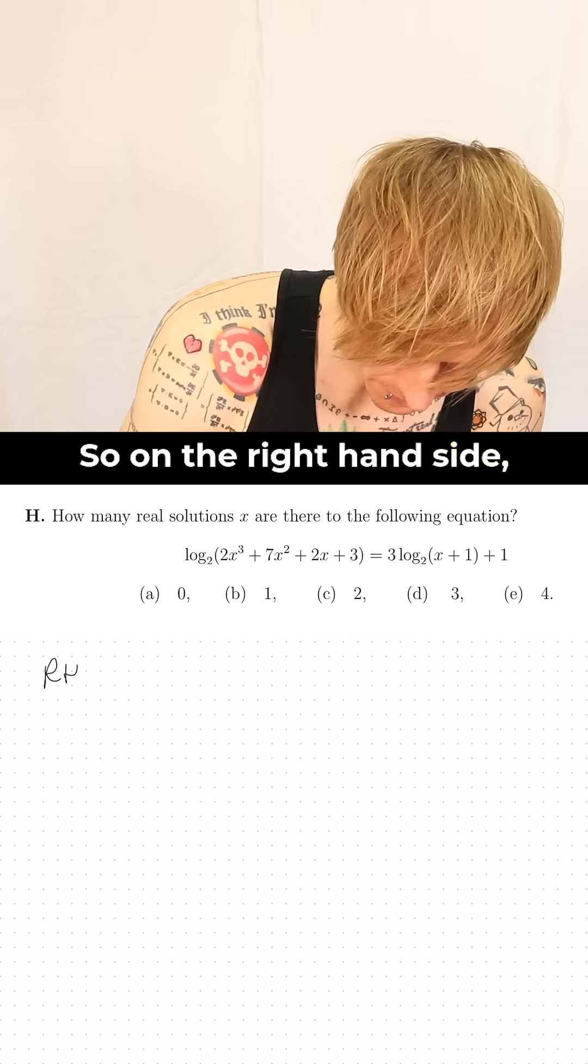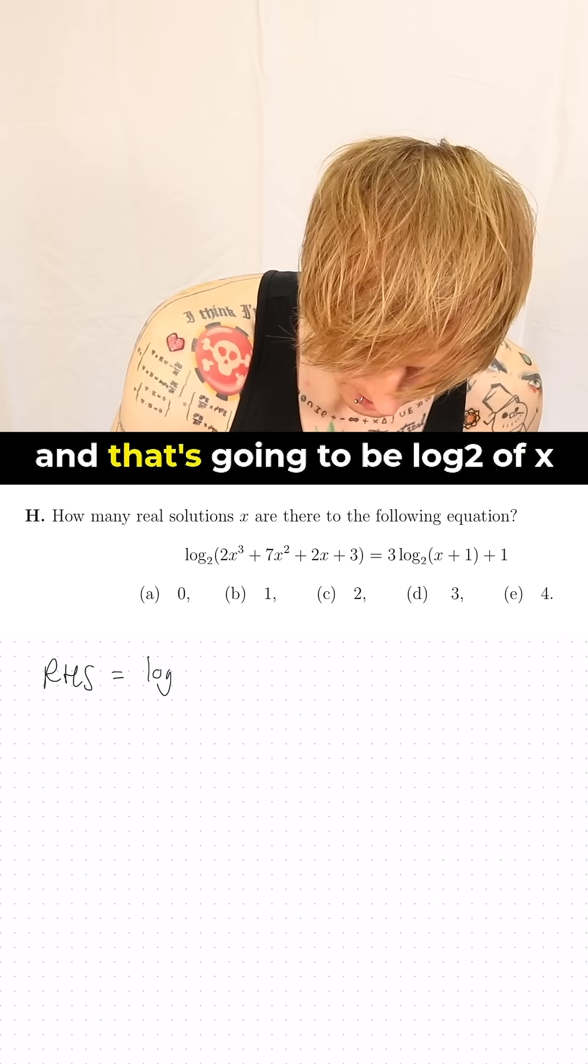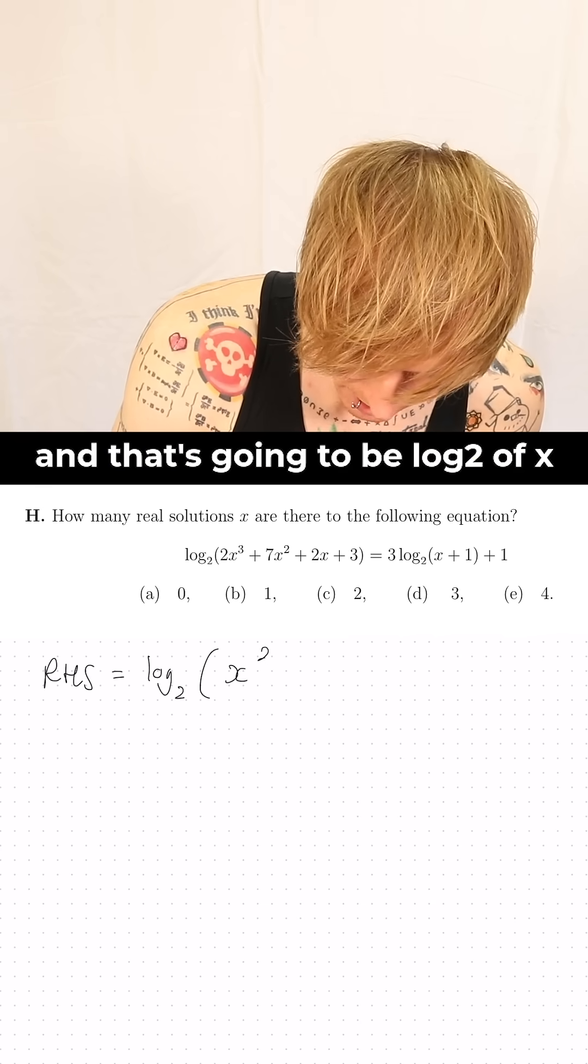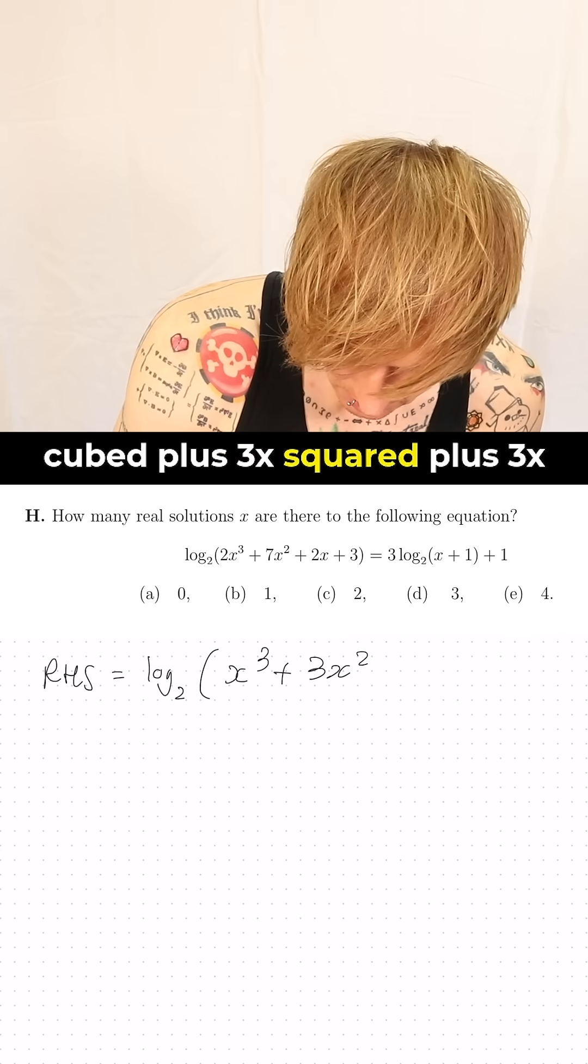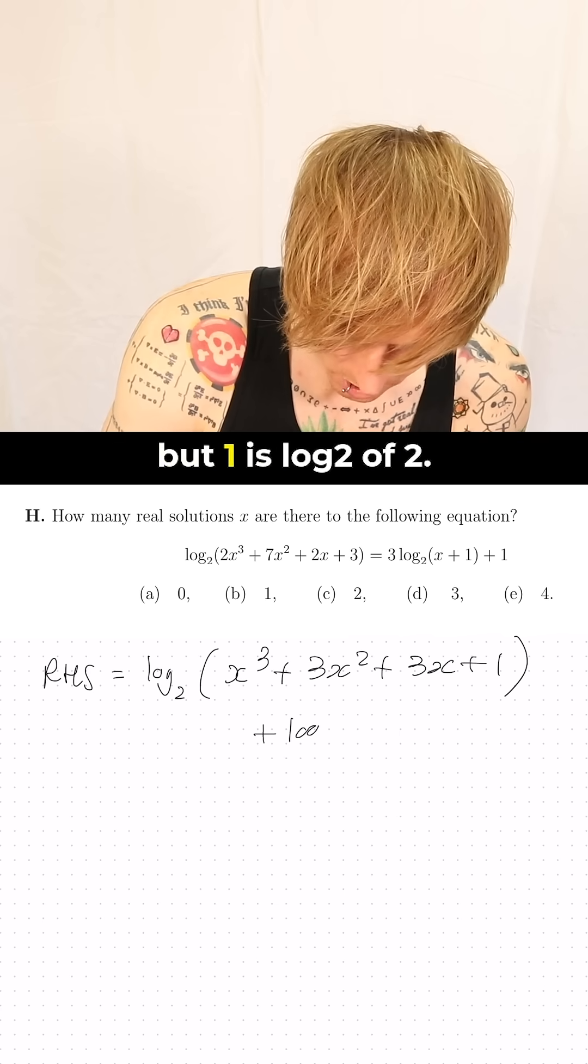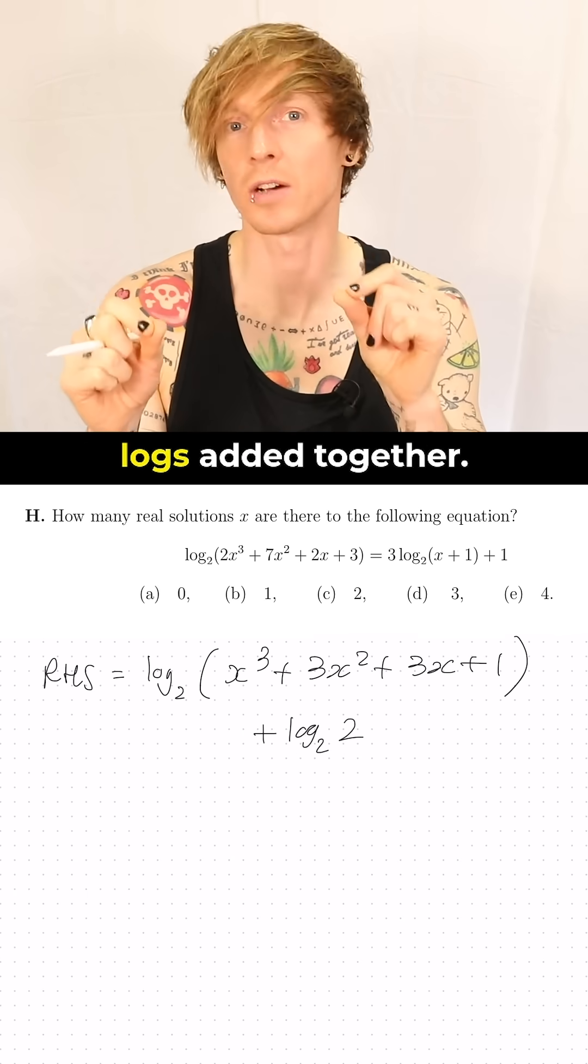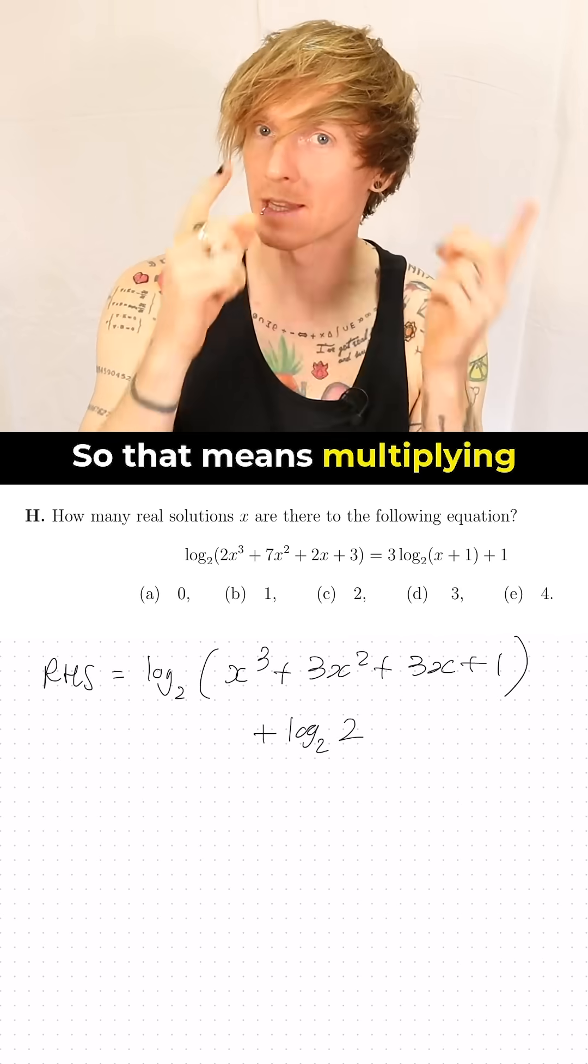So on the right hand side using the properties of logs we can expand the cubic term and that's going to be log 2 of x cubed plus 3x squared plus 3x plus 1 and then we have plus 1. But 1 is log 2 of 2 so then we now have two logs added together so that means multiplying them inside the bracket.